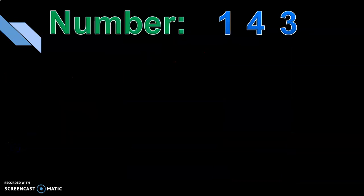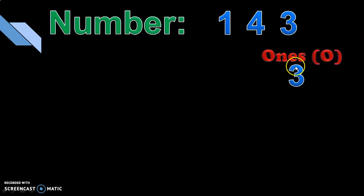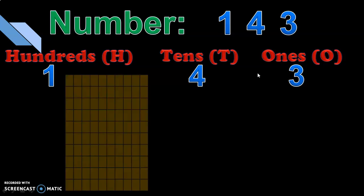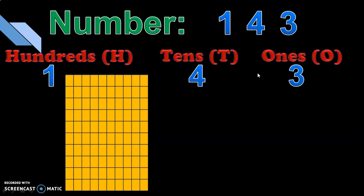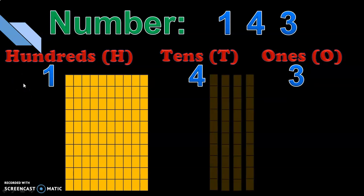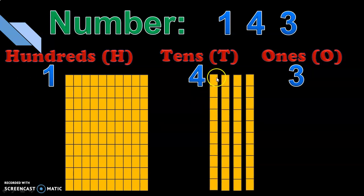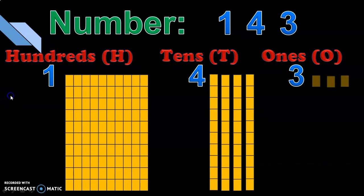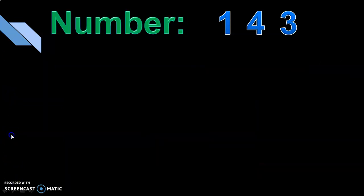Let us do this activity for another three-digit number: 143, one hundred and forty-three. Here three is in the ones place, four is in the tens place, and one is in the hundreds place. As we saw, one hundred equals ten tens — this is how one hundred is represented. Next we need four tens, represented like this: first group of ten, second, third, and fourth. So we have four groups of tens to represent forty. Then three ones are represented with three sticks.